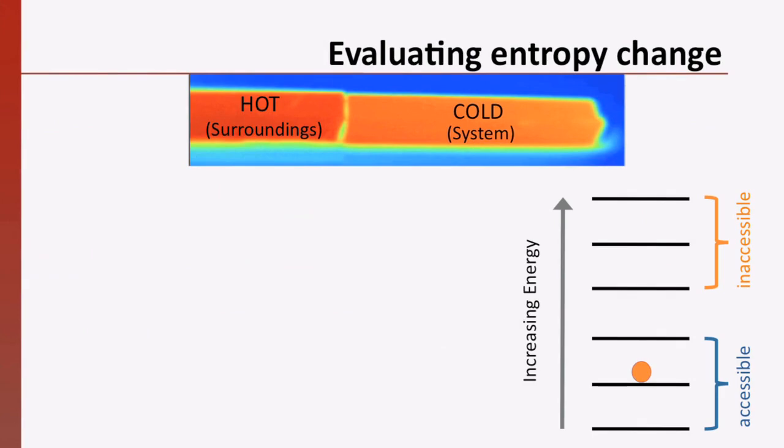Let's start with the system first. The transfer of energy to the cold bar will allow the molecules in the cold bar to access new energy levels that they could not reach before, increasing the number of possible microstates for that system. So, we would suspect that the entropy change for this system is positive.